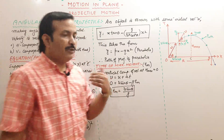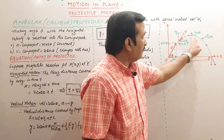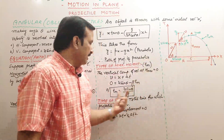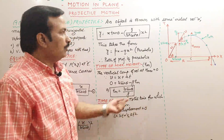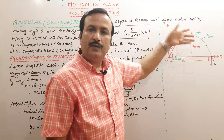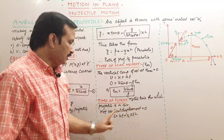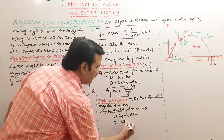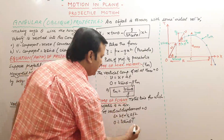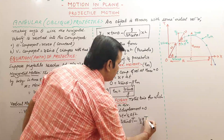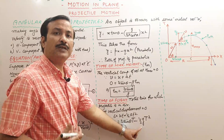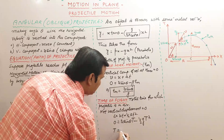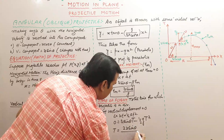The total time of flight is the total time for which the projectile is in the air. When it reaches point B, vertical displacement is zero. Using s = ut + ½at²: 0 = u sinθ · T − ½g·T². Solving, T = 2u sinθ / g. This total time is called the time of flight.